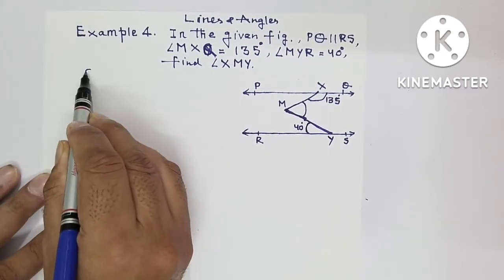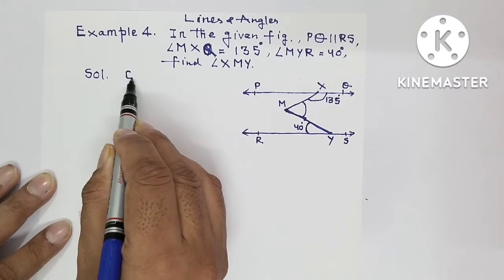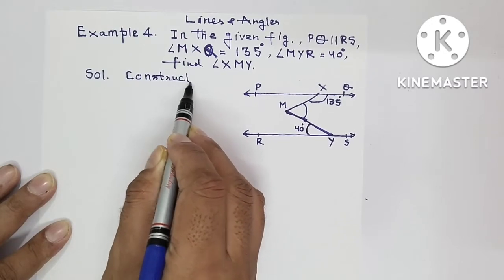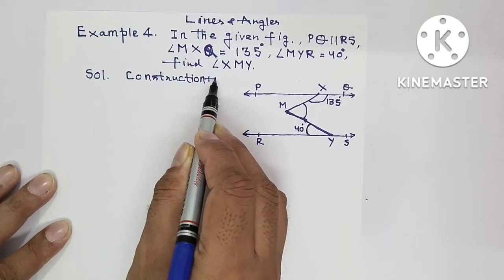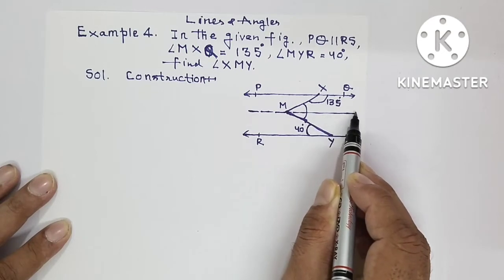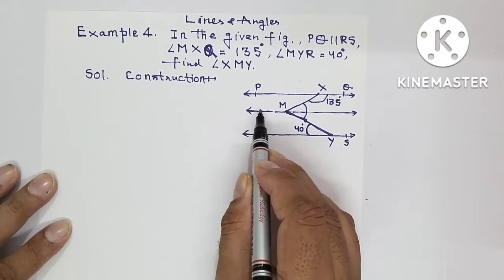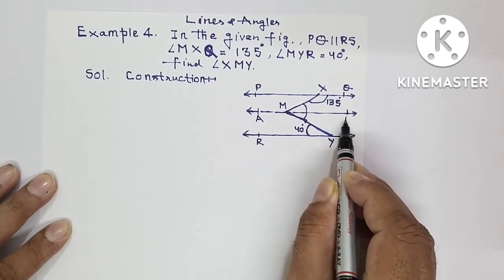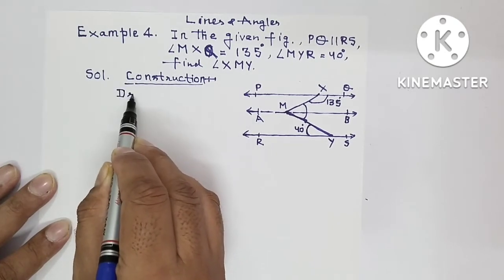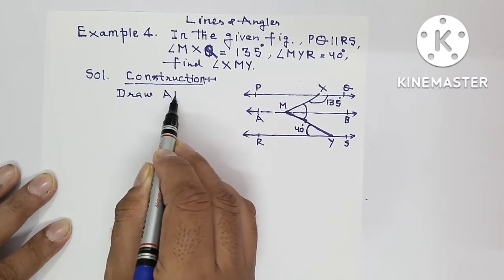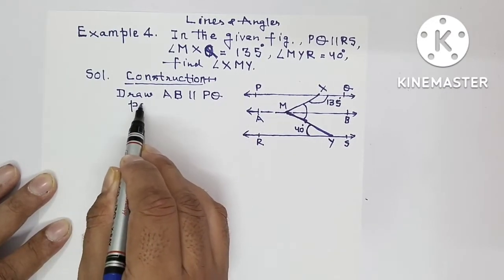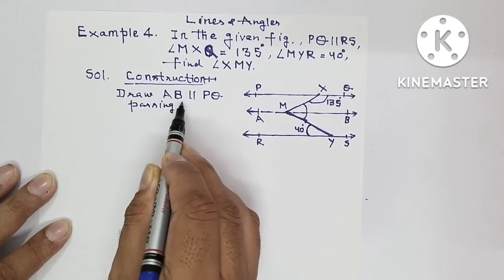This question cannot be solved without construction. In this question, first you need to write a construction step. In construction, we will draw one line parallel to PQ. Let the name of this line be AB. So we have drawn AB line parallel to PQ line. In construction you will write: draw AB parallel to PQ passing through point M.